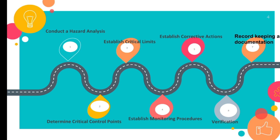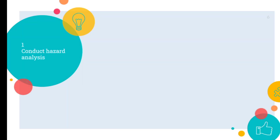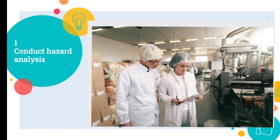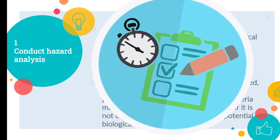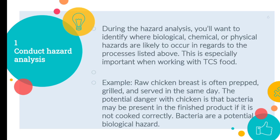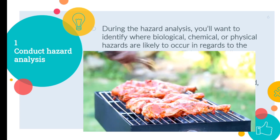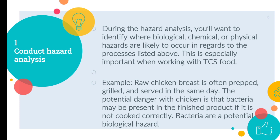Let's discuss each principle in detail. First is Conduct a Hazard Analysis. The first step in developing a HACCP plan is to evaluate potential hazards that may arise during food preparation processes. You will want to identify where biological, chemical, or physical hazards are likely to occur, especially when working with TCS foods. For example, raw chicken breast is often prepped, grilled, and served in the same day. The potential danger is that bacteria may be present in the finished product if it is not cooked correctly — bacteria are a potential biological hazard in this case.